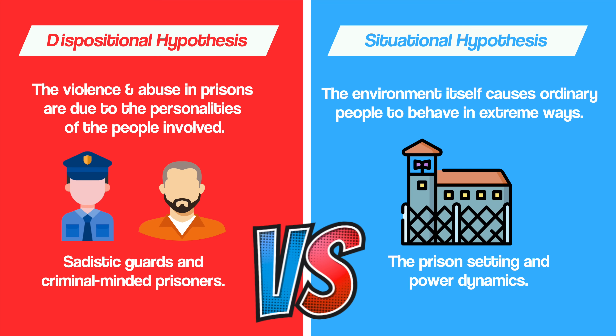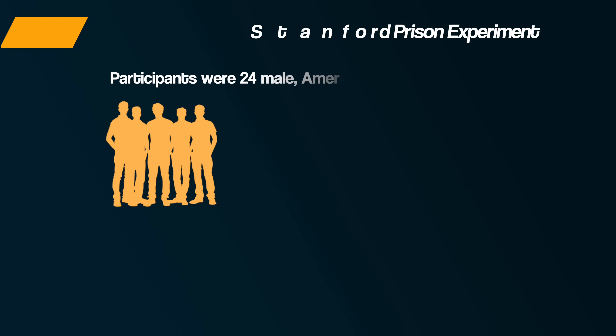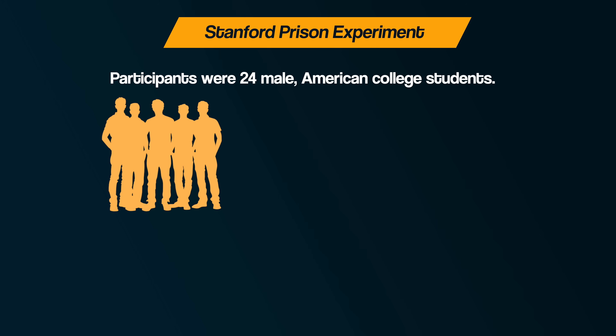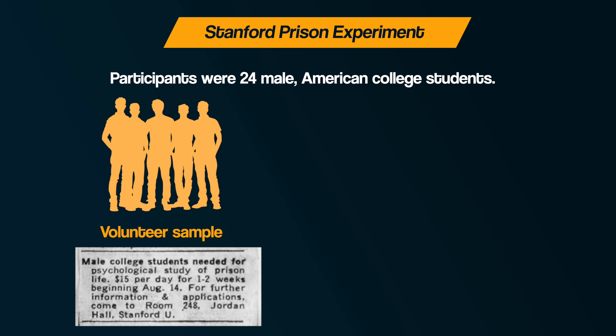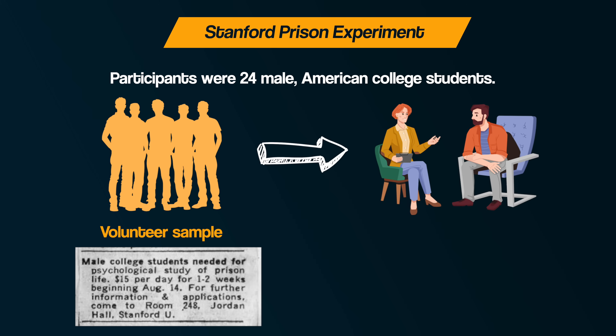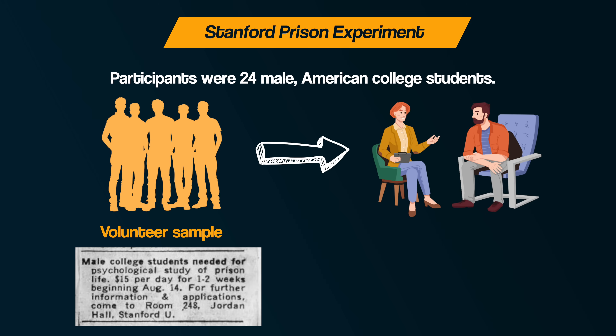This was no small study — it was commissioned by the US Navy, who turned to Philip Zimbardo and Stanford University to investigate. The study involved 24 male American college students, all recruited through a newspaper advertisement promising $15 a day. They were told the study was about prison life and that it would last one to two weeks.